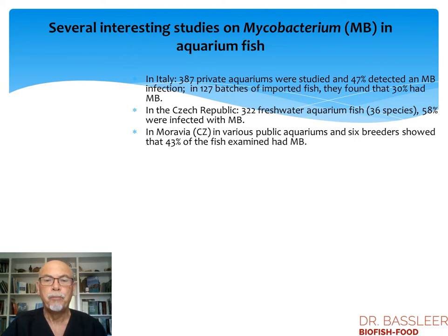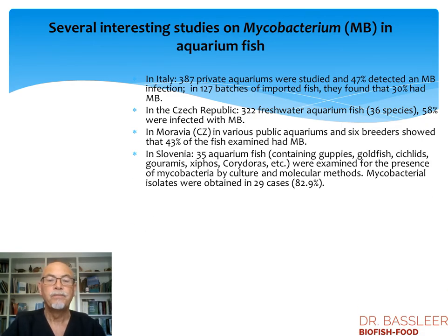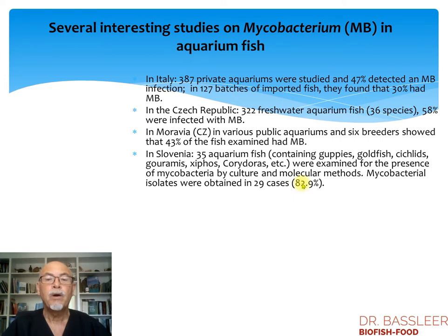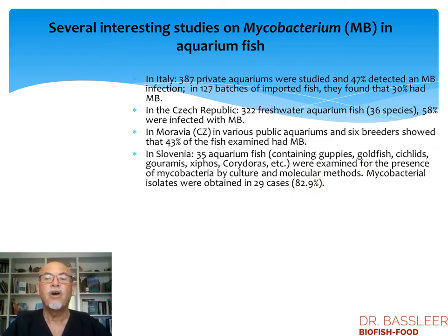In Moravia, a study on public aquariums and breeders showed that 43% of fish examined had mycobacterium. In Slovenia, 35 different aquarium fish species — guppies, goldfish, cichlids, gouramis, swordtails, corydoras — were examined by culture and molecular methods, and mycobacteria were obtained in nearly 83% of cases. This figure is high because molecular detection can mean the fish is just a carrier, not actually diseased. So not necessarily are the fish sick, but they could be carriers of mycobacterium.